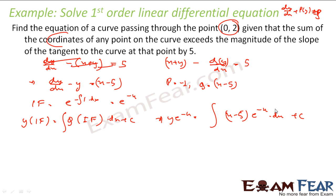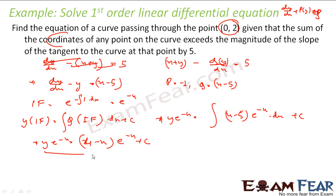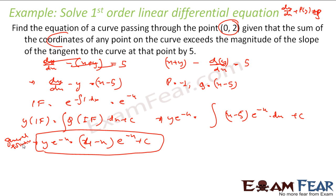Solving this integral, we get y·e^(−x) equals (4 − x)·e^(−x) plus c. This is the general solution. But I am looking for a particular solution in this case because the point (0, 2) is given.